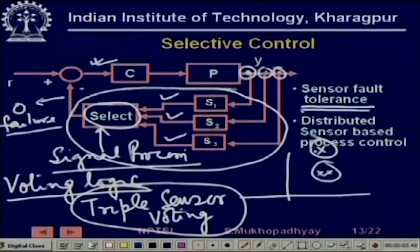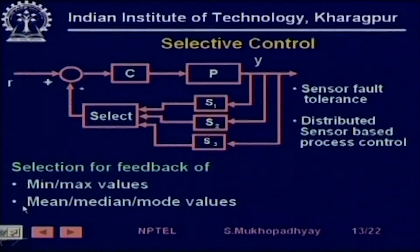By doing this you can achieve a certain degree of sensor fault tolerance. You can use sensor selective control, and there are even other situations where you can do median filtering — selecting the middle value when one sensor gets a large noise spike — so you can reject noise better. Selection of feedback using minimum, maximum, mean, median, or mode values, depending on the application, is selective control. It is a common sense approach but can sometimes give significant protection from sensor failures.